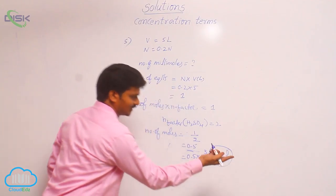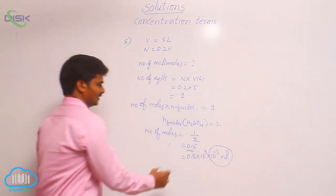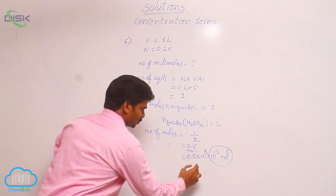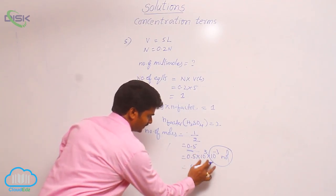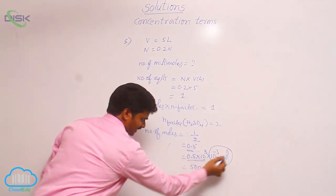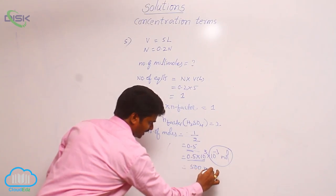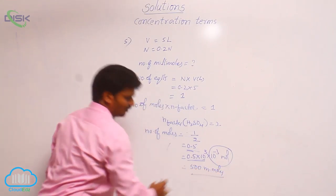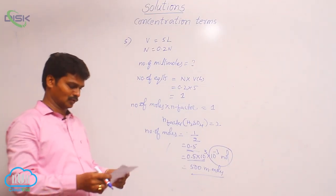10⁻³ moles is nothing but millimoles. So, 0.5 into 10³ means 500, this value 500 millimoles. So, answer is 500 millimoles.